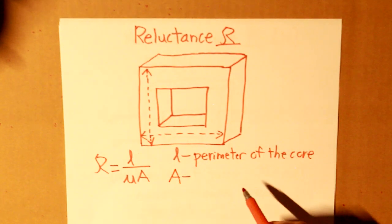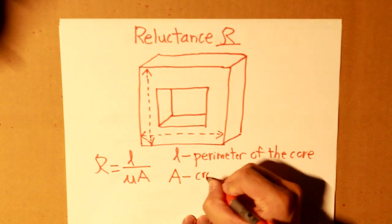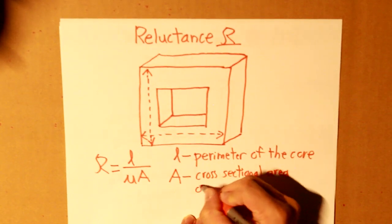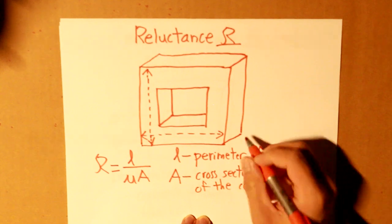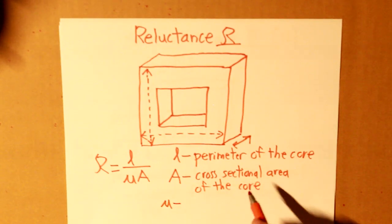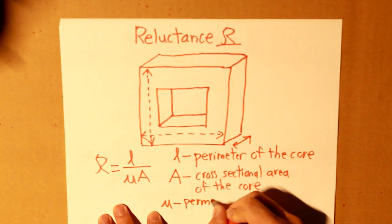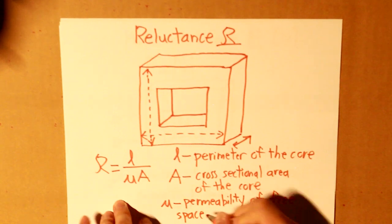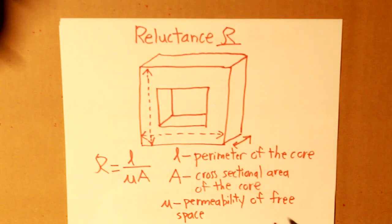Capital A is the cross-sectional area of the core. And that, essentially, is the thickness. So, right here, the thickness. And mu is the permeability of free space. Now, in a question, you would be given the permeability of free space. So, that's a constant. So, there we have it. That's our reluctance, cursive R. And cursive R is equal to L divided by mu times A.